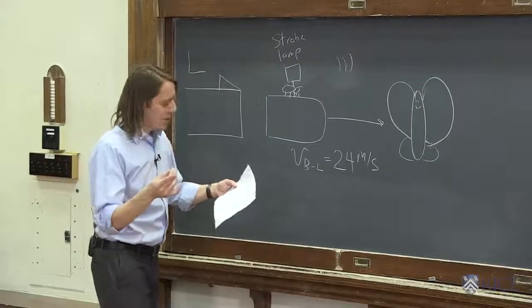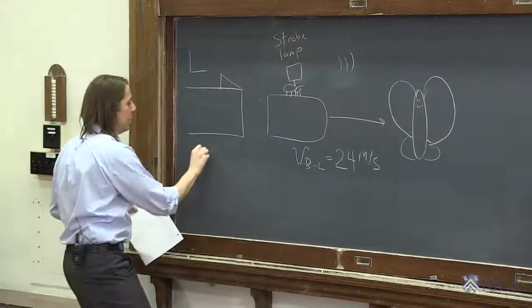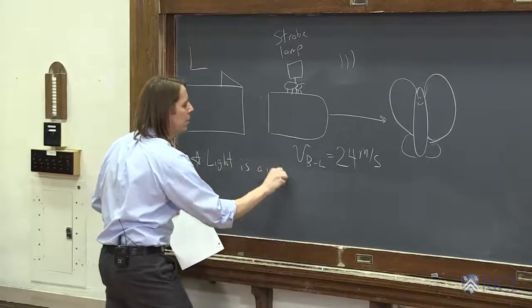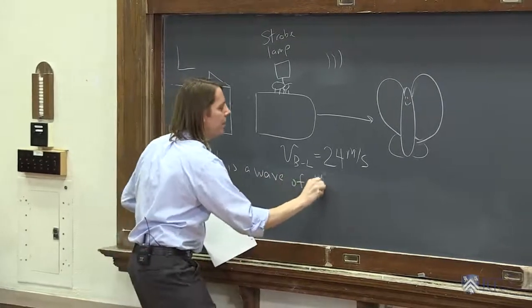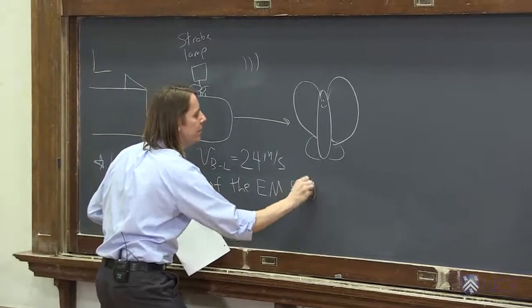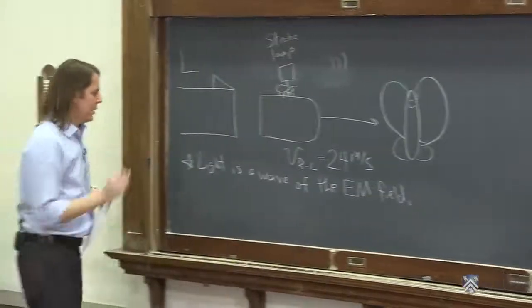So now we have to think about light. Light is also a wave of the EM field, the electromagnetic field. It moves very fast.